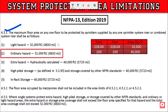For light hazard, the maximum floor area on any one floor is the defined limit. The maximum floor area on any one floor to be protected by sprinklers supplied by any one sprinkler system riser or combined system riser shall be as specified. The light hazard maximum floor area is set, and the ordinary hazard and extra hazard values are also defined accordingly.